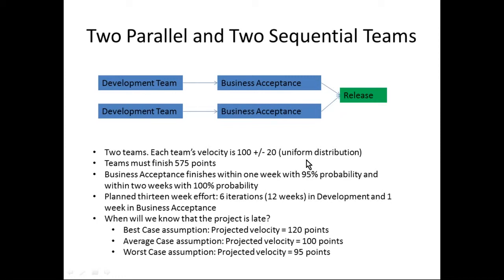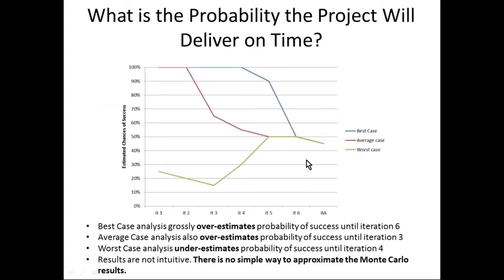Looking at the data: the right answer is on the right-hand side of the chart. In this situation, there's a 45% chance that this project will finish on time. You can see from that answer that the standard planning approach is never going to give you that answer — it doesn't produce a probability of success. And what this chart also shows is that standard Agile techniques looking at best case, average case, and worst case are all way off the right answer until you're well into the project and have spent a lot of money on something likely to fail.